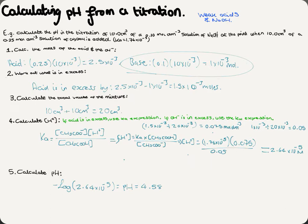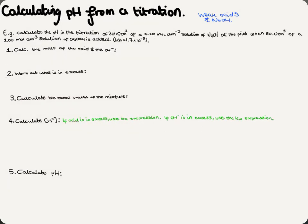There's a second example for extra practice. Calculate the pH in the titration of 30 cm³ of a 0.7 mol dm⁻³ sodium hydroxide solution at the point when 50 cm³ of a 1 mol dm⁻³ solution of ethanoic acid is added. The Ka this time is 1.7 × 10⁻⁵.